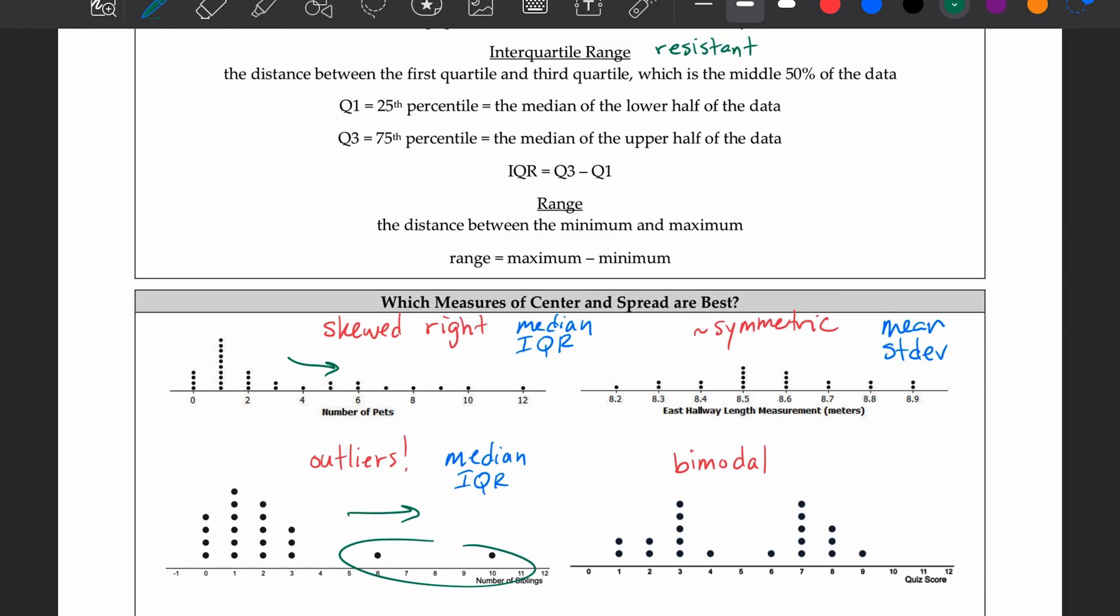Range is also non-resistant. So when do we use it? Only for histograms. If you have only a histogram with no other information, the best you can really do is go, the minimum lies here, the maximum lies there, so here's roughly my range. Range is really just the backup plan if you're just given a histogram.